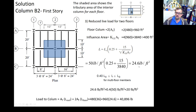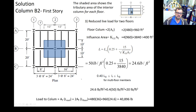The total load on column B2 at the base is: 480 times 36 (roof) plus 960 times 24.6 (two floors) equals 17,280 plus 23,616 equals approximately 40,896 pounds, or about 41 kip. That's how you calculate it.